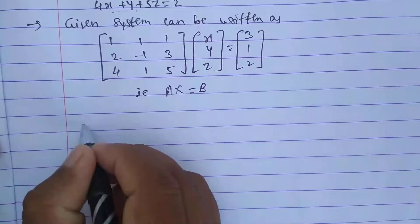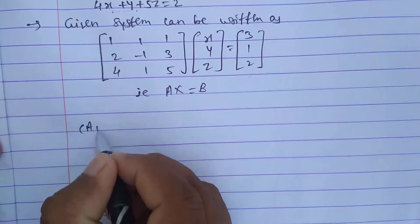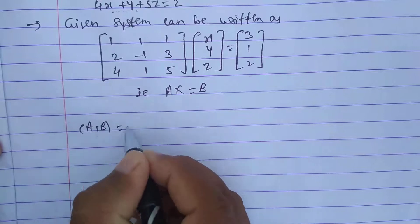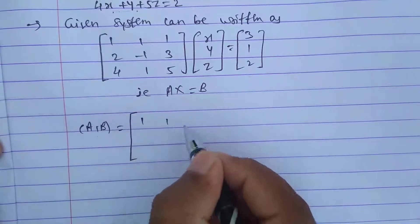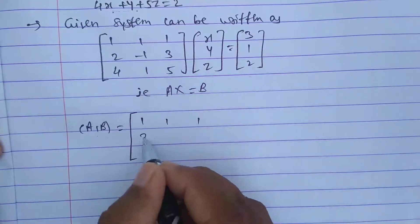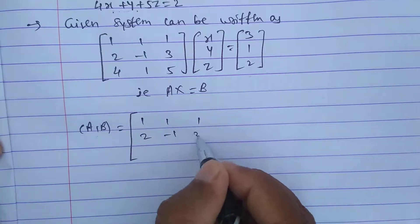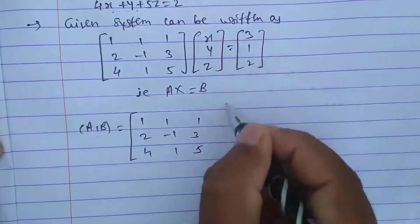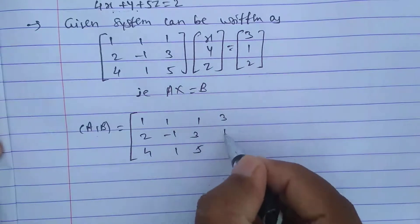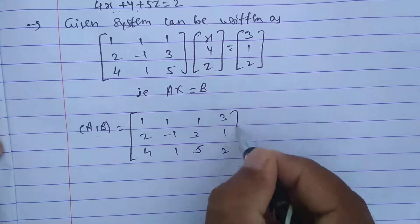The augmented matrix [A|B] is the A matrix as it is with one extra column added: 3, 1, 2.